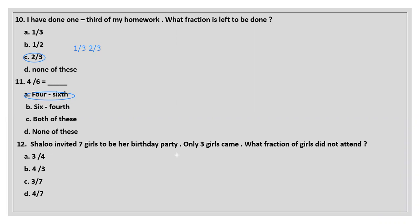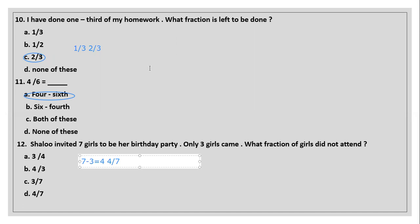Question 12: Salu invited seven girls to her birthday party. Only three girls came. What fraction of the girls didn't attend? Seven minus three equals four, so four girls did not attend. The fraction is four by seven. Option D is the correct answer.